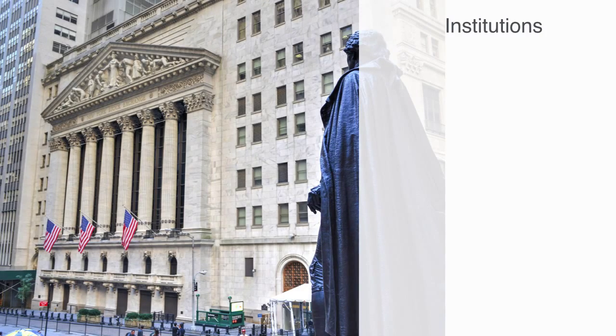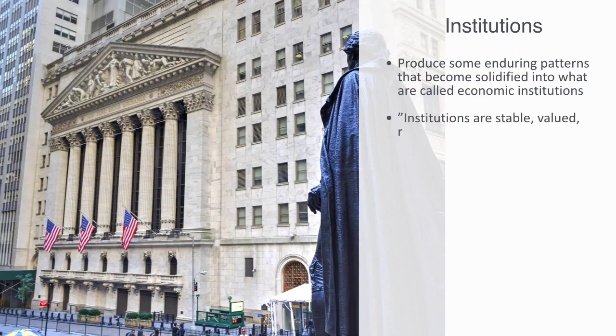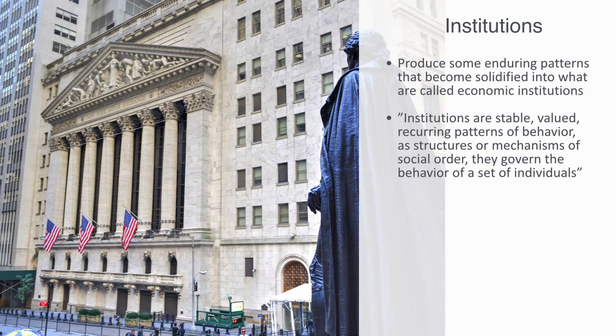All of these interactions between agents are going to produce some enduring patterns, that become solidified into what are called economic institutions. The idea of an institution is one of the basic concepts within all of social science. Wikipedia has a good definition for a social institution. Quote, institutions are stable, valued, reoccurring patterns of behavior, as structures or mechanisms of social order, they govern the behavior of a set of individuals. Examples of economic institutions are financial markets, corporations, banks, pension funds, insurance companies, and all kinds of special purpose vehicles, amongst many others.